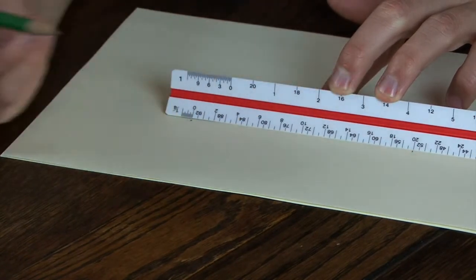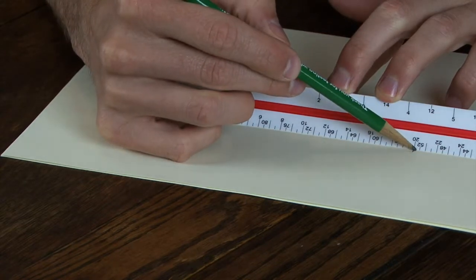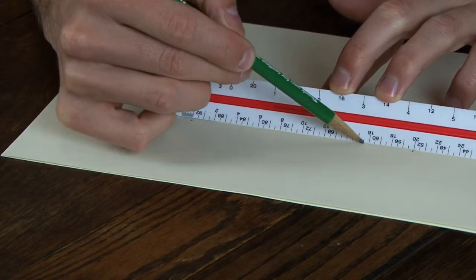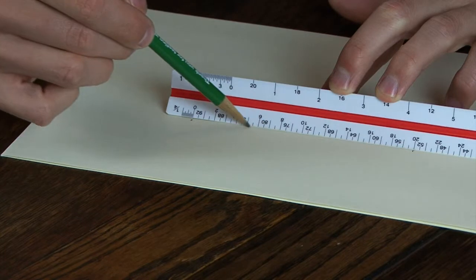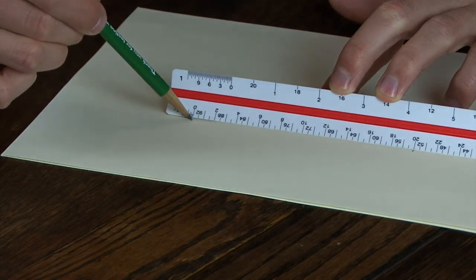So you have your two end points marked. And then using the scale as a straight edge, you're going to pull your pencil across and connect the two points.